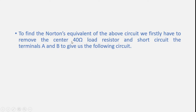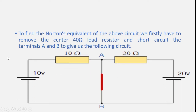To find the Norton's equivalent of the above circuit, we firstly have to remove the 40 ohm load resistor and short circuit the terminals A and B to give the following circuit. Now A and B are shorted. This is 10 volt and this is 10 ohm.